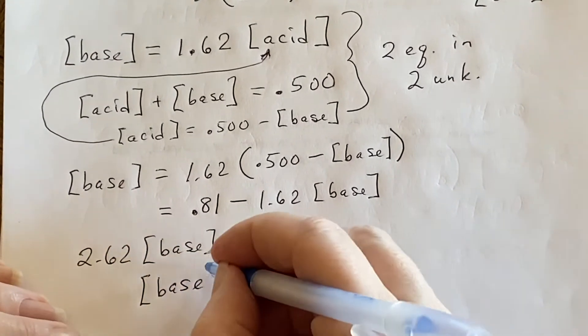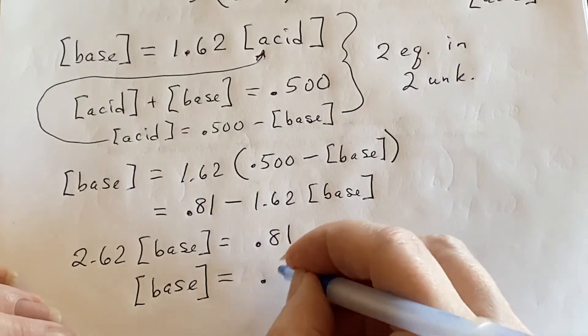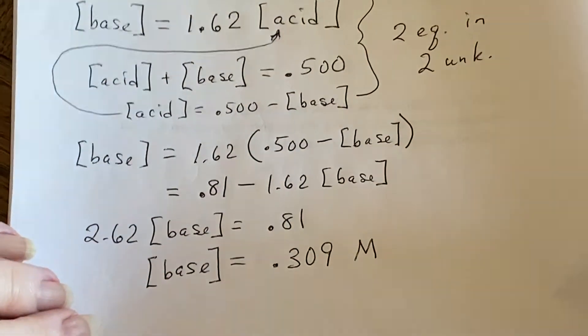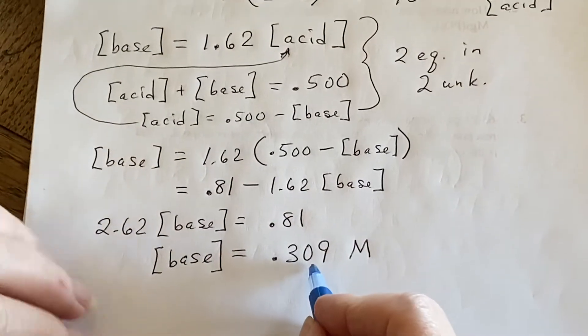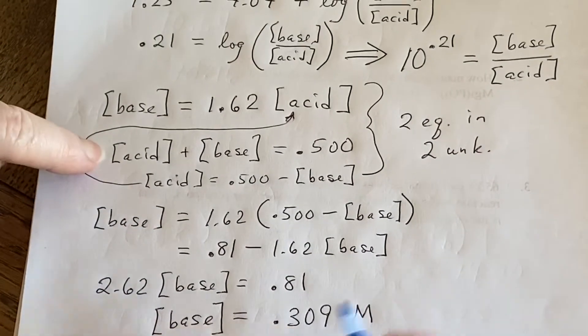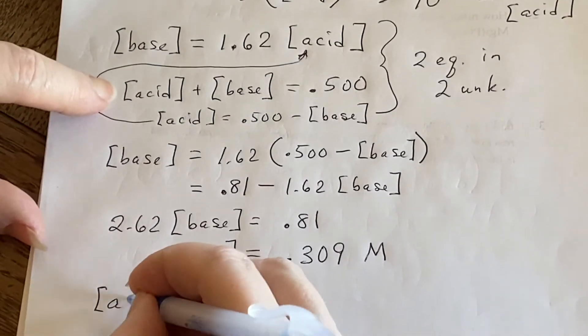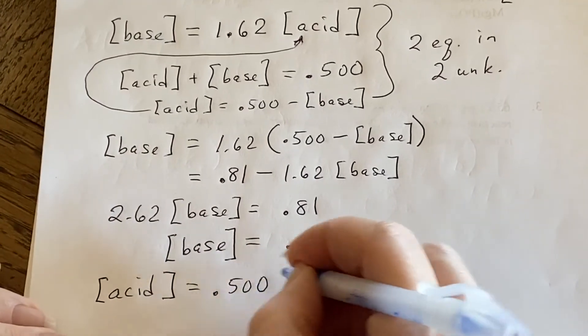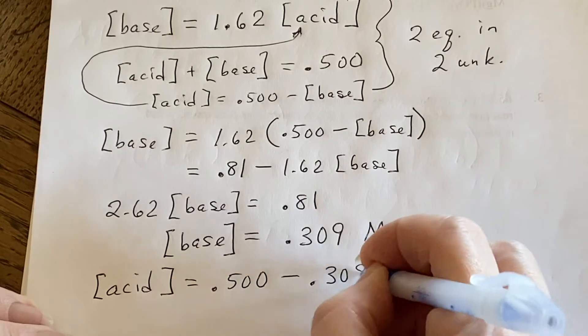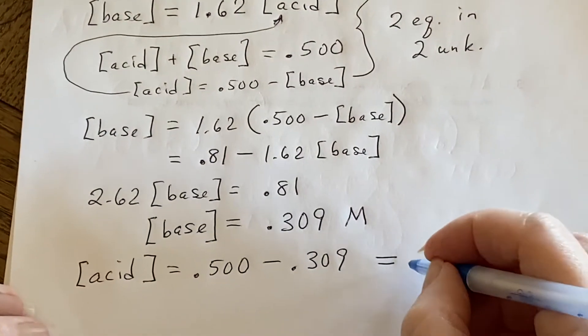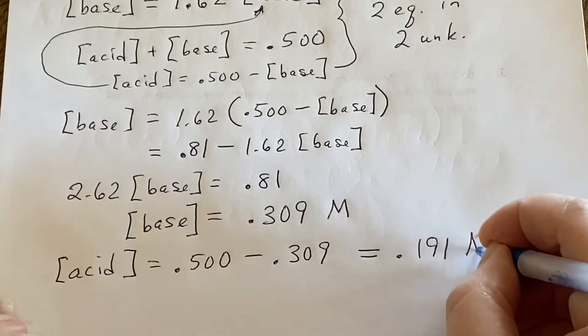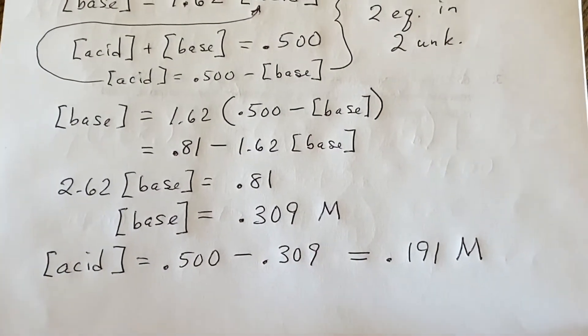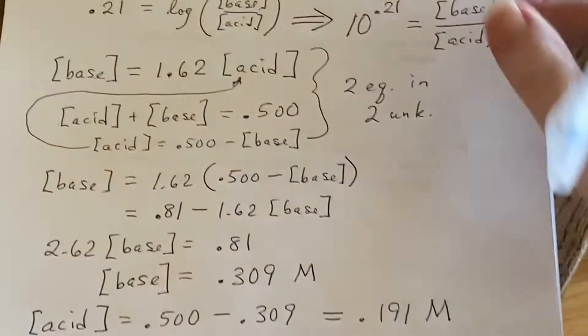And when you solve for the concentration of base, you will get 0.309 molar. Once you've got that, you can come back up here and substitute and say, okay, the concentration of acid then is going to be 0.500 minus 0.309, and it will be 0.191 molar. Well, that's great. We've done all this work.